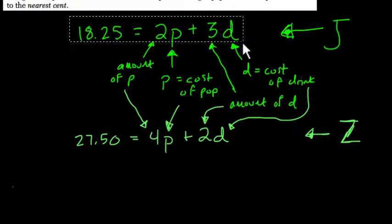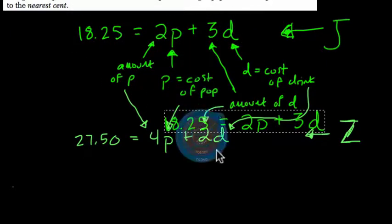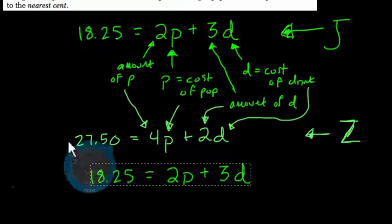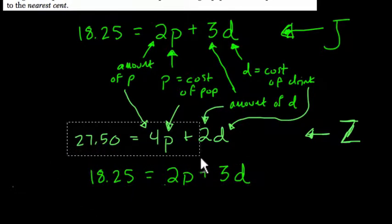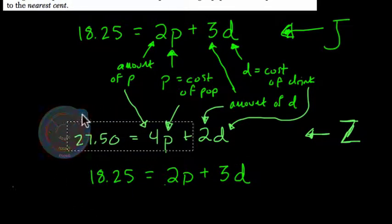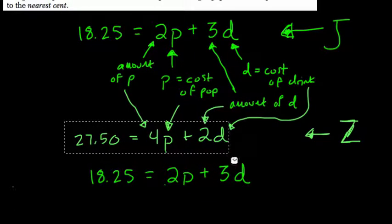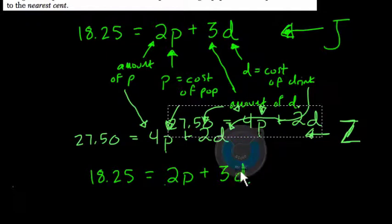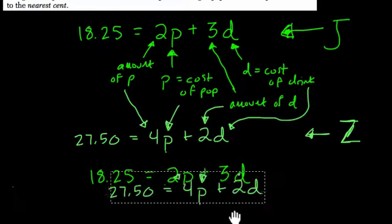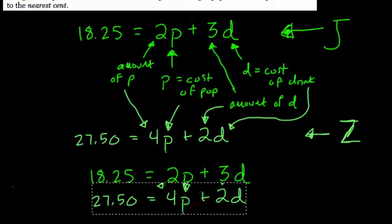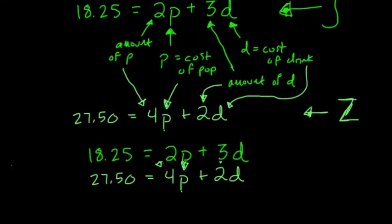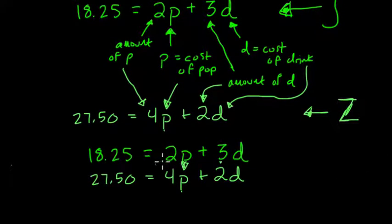Then they want us to use these equations to determine and state the price of a bag of popcorn and the price of a drink. So here, let's just put these two equations together. I'm going to just copy and paste. You might want to rewrite them. I'll move this down here. So here, with the exception of the P, everything came out good here.